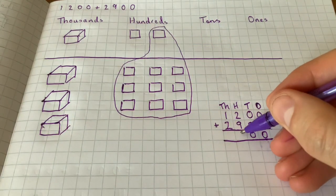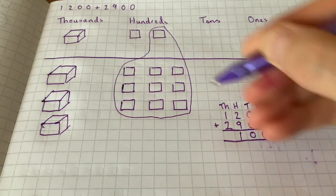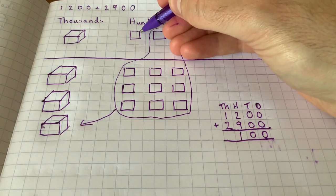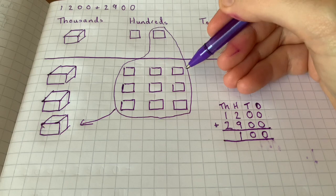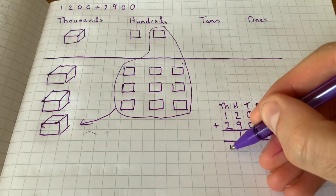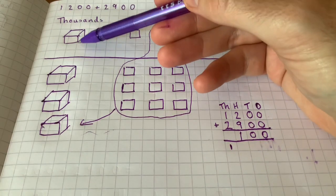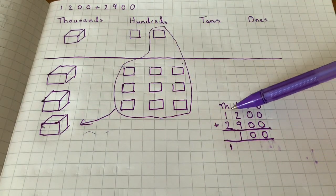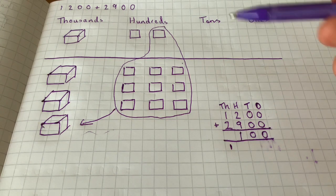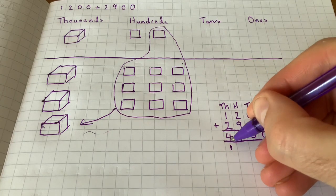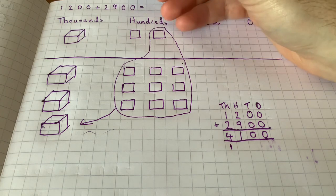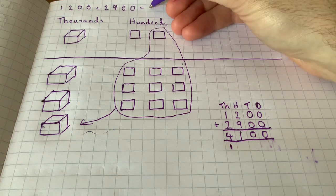So what we do with our eleven hundreds is that we regroup ten of them into a thousand. So now I know that I've only got one hundred left there, so we can see that one there. And then we've got our ten hundreds that are the same as one thousand, so I'll just mark my one thousand there. So then I can add my thousands together. So I've got one thousand add two thousand, which means three thousand, and we add the final thousand, which is four thousand. So we know that the answer then to one thousand two hundred and two thousand nine hundred is four thousand one hundred.